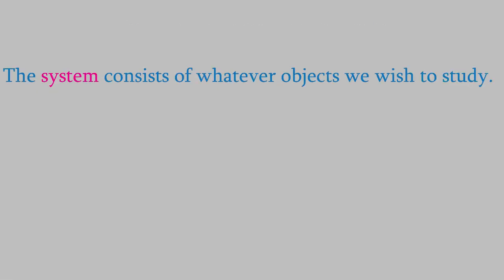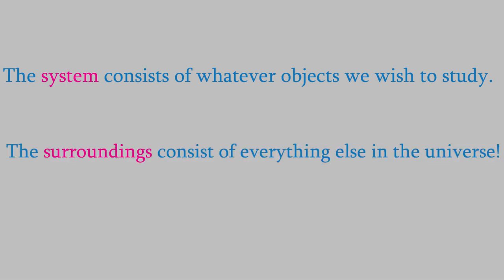The system is defined as the items we want to study, for example, the reactants of a chemical reaction. Meanwhile, the surroundings technically include everything else in the universe. Of course, we can't keep track of every object in the universe, so in practice we just pay attention to specific things. These might include the solvent in which the reaction takes place, the glassware and equipment in which the reaction occurs, and the air in the lab.